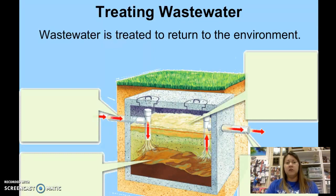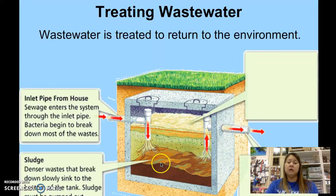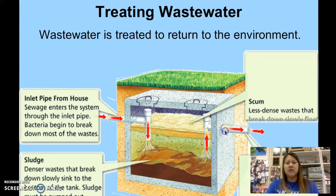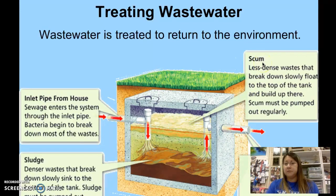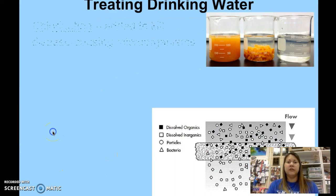This diagram shows how wastewater — like from flushing a toilet — is treated. It goes through a pipe into a tank. The solid, dense material sinks to the bottom and becomes what's called sludge, which gets pumped out of septic tanks. The less dense, watery, scummy material floats at the top. An outlet pipe allows that liquid to be pumped elsewhere.